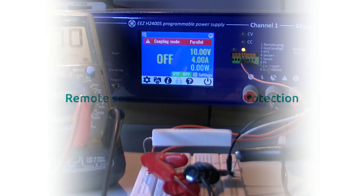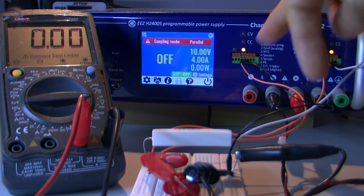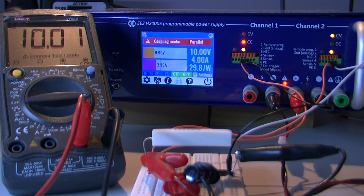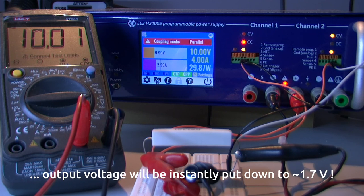When connecting remote sensing input to outputs you need to take care about polarity. And we added reverse polarity detection. If you mistakenly swap those cables, that will be detected and firmware will automatically switch off power output.